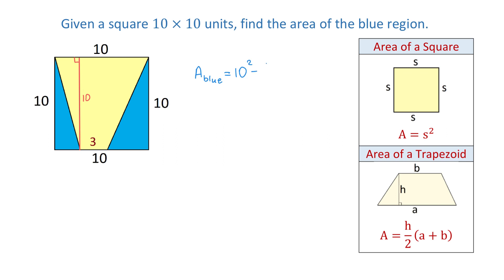That is the height 10 divided by 2 multiplied by the sum of the bases 10 and 3. 10 squared is 100, 10 divided by 2 is 5, and 10 plus 3 is 13.